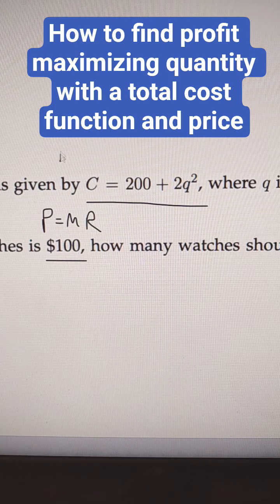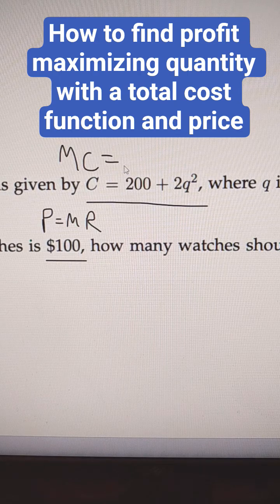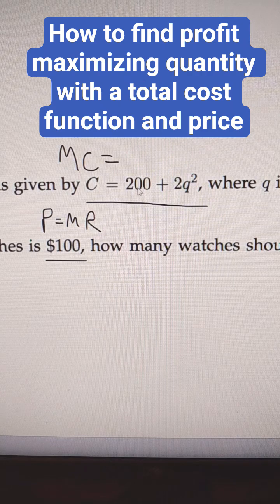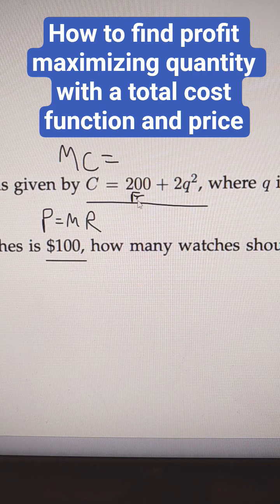You just need to calculate what the marginal cost is from the total cost function. So we're just going to take the partial derivative with respect to Q. This is a constant. That is actually their fixed cost.